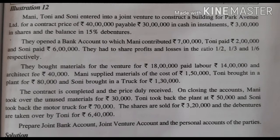On closing the account, Money took over the unsold materials for Rs. 30,000, Tony took back the plant for Rs. 50,000 and Sony took back the motor truck for Rs. 70,000. The shares are sold for Rs. 3,20,000 and the debentures are taken over by Tony for Rs. 6,40,000. Prepare joint bank account, joint venture account and the personal account of all the parties.